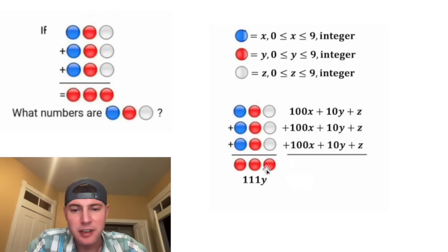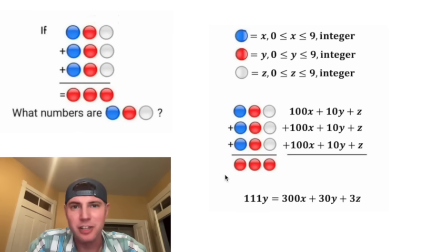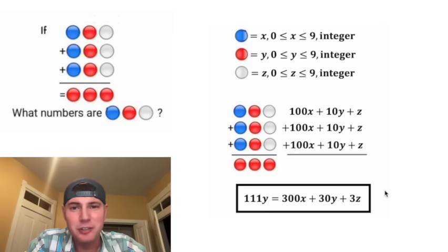After we add these three up, it's going to be the same thing as these three red dots. 100x plus 100x plus 100x is 300x. 10y plus 10y plus 10y is 30y. And z plus z plus z is 3z. So both of these are equal to the three red dots, so we know that they're going to be equal to each other. And this looks important. Let's put a box around it.